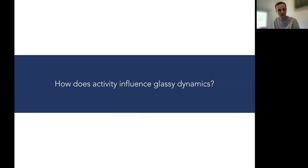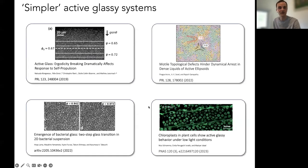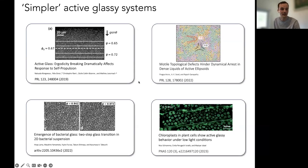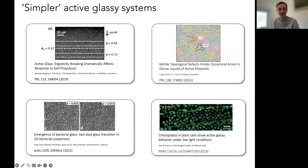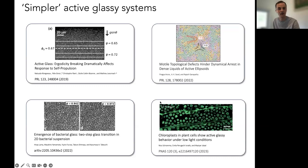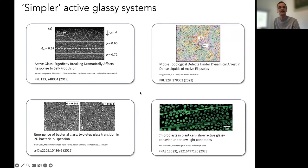The motivation for active glassy materials initially came from cellular systems, but recently more experimental realizations have been found: active glassy materials in the colloidal regime with Janus particles, in the granular regime, and in other areas of biology — including a glass transition in dense collections of bacteria and active glassy dynamics in chloroplasts in plant cells. This growing body of experimental evidence has further motivated us to look into the effect of activity on glassy dynamics.